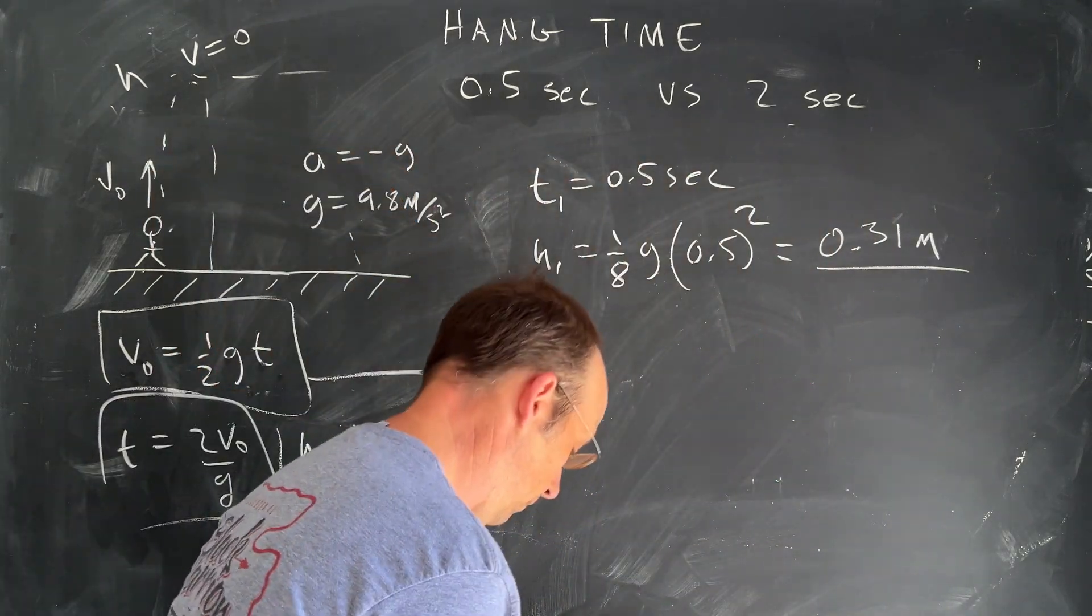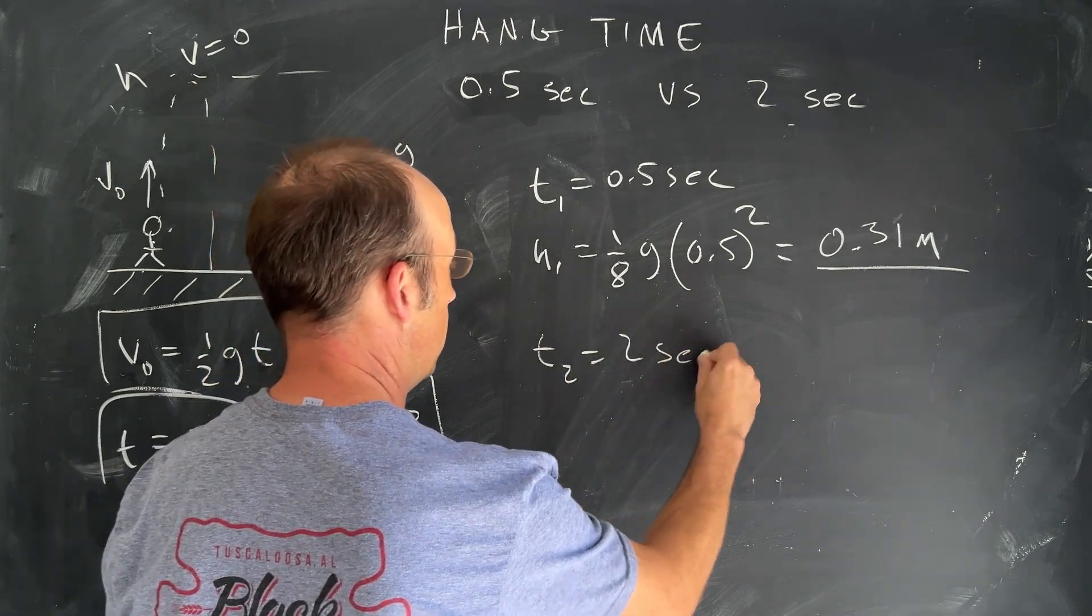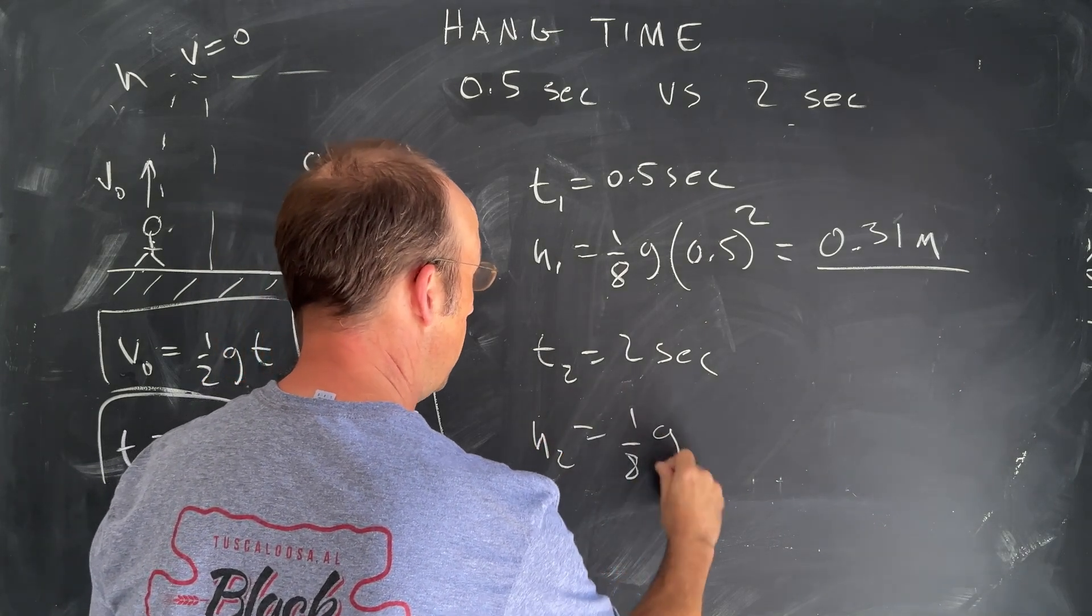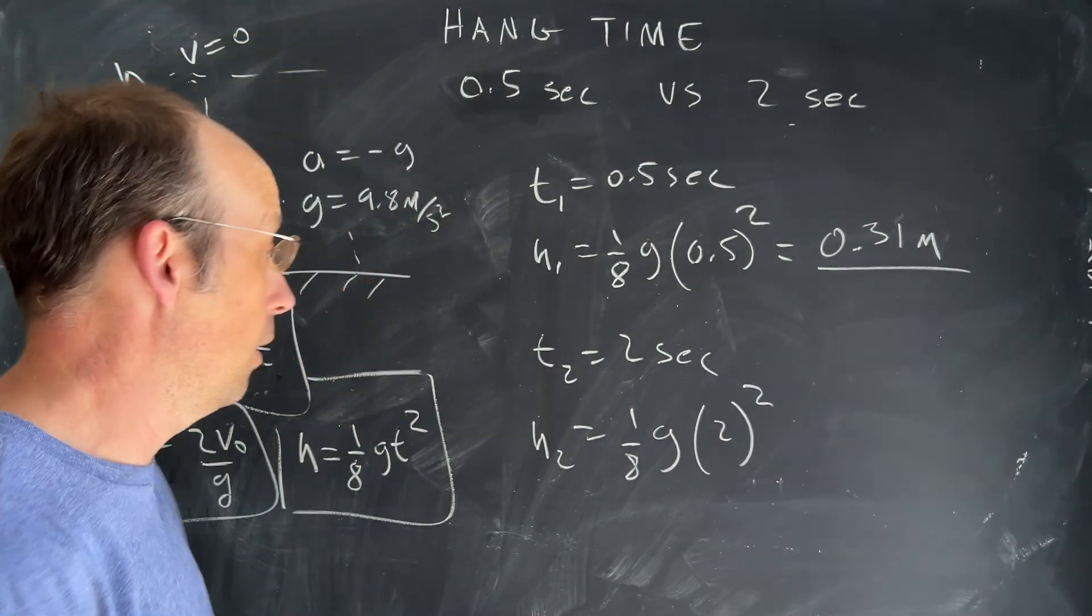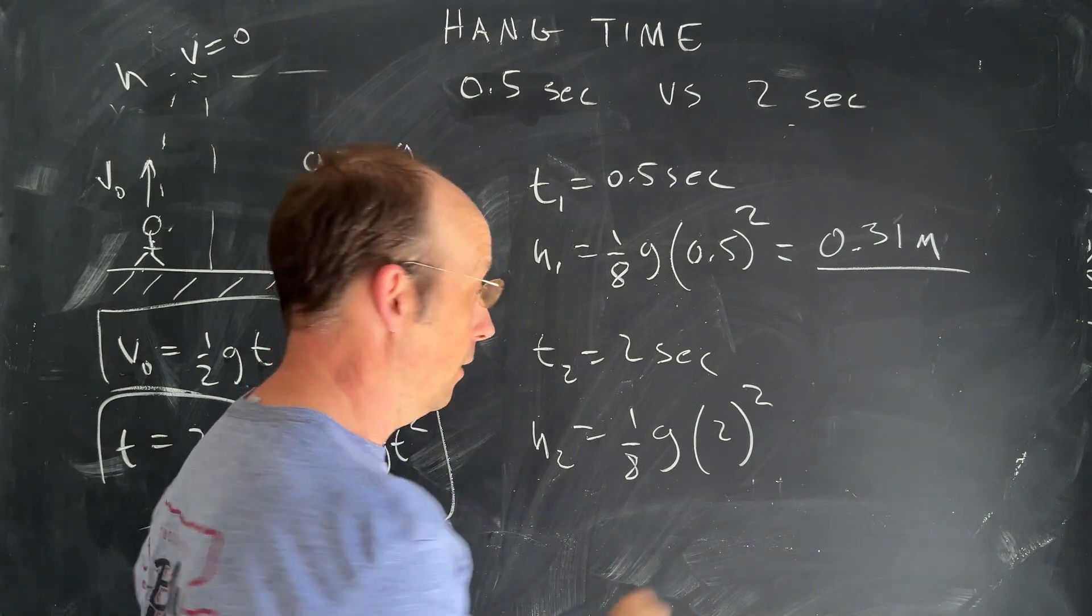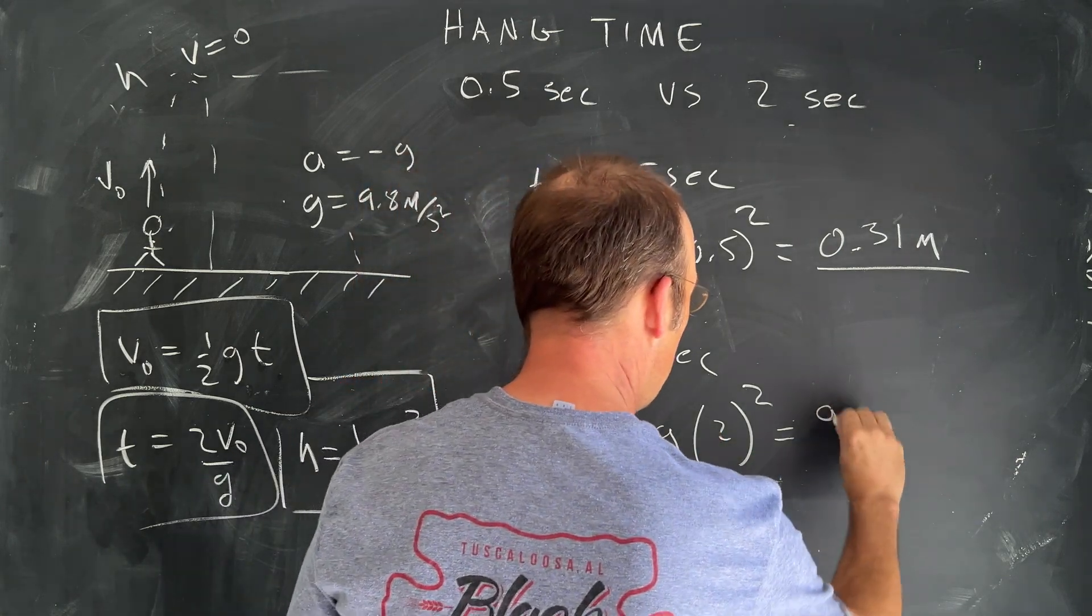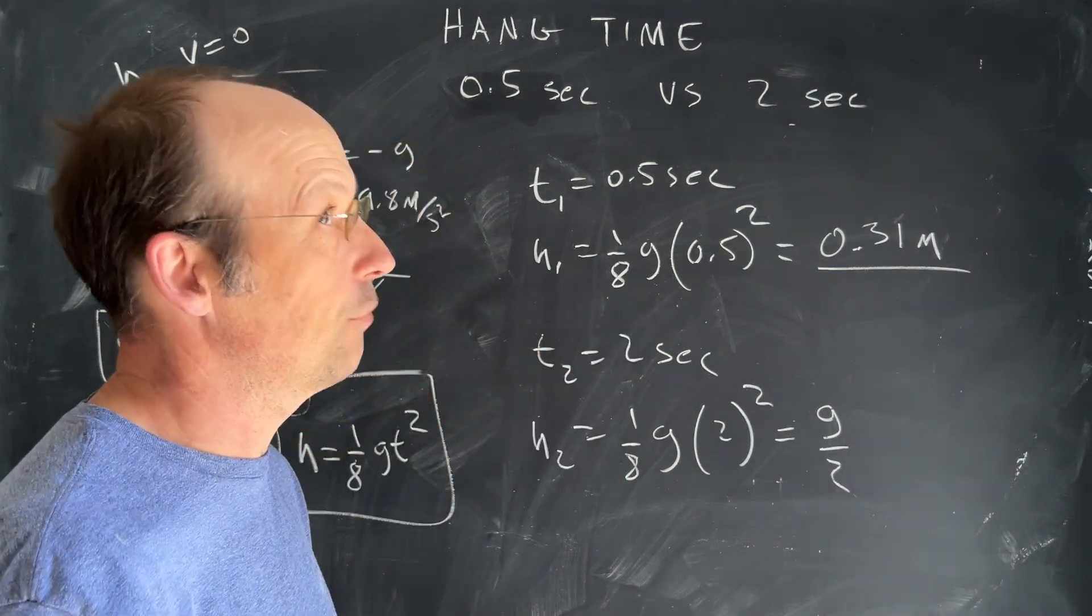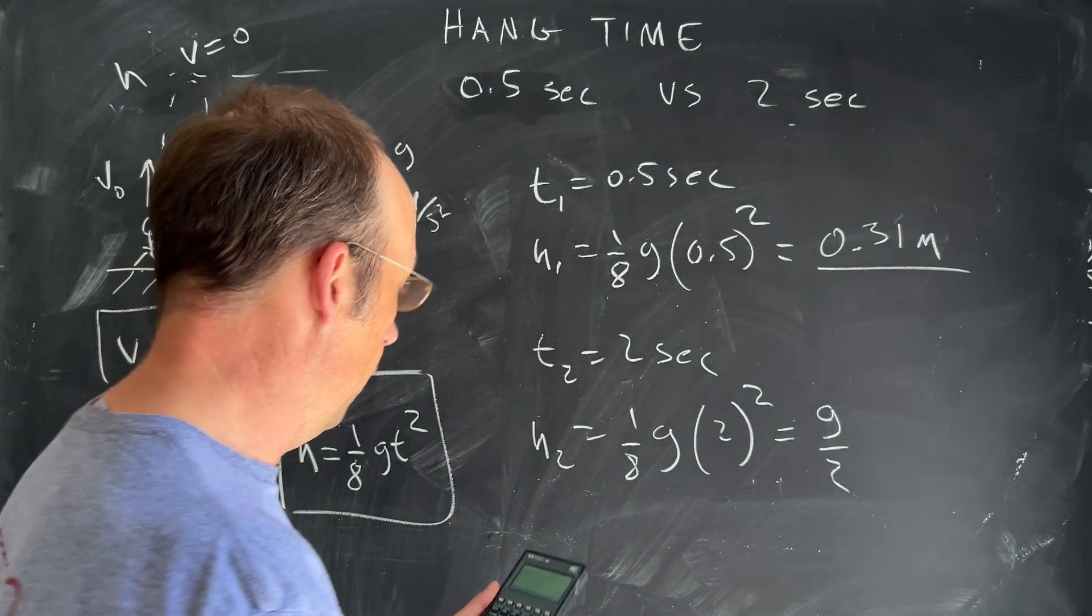Now let's do t two is two seconds. Well, that's going to be h two is one eighth times g times two squared. So I know two squared. I can do that one in my head. That's four. So it's going to be four divided by eight. So it's going to be a half, right? So let's do this as four over eight is a half. So g over two. See, we don't use calculator. Now I do want to do g over two, even though I know it is 4.9, but you can do 9.8 divided by two, 4.9.